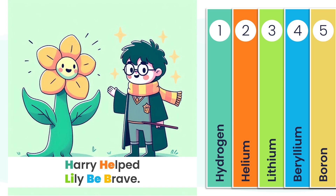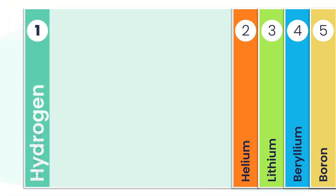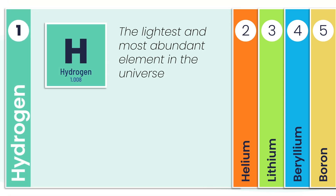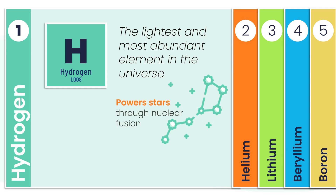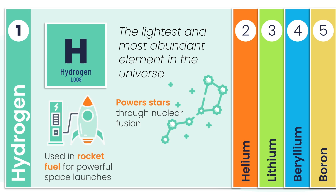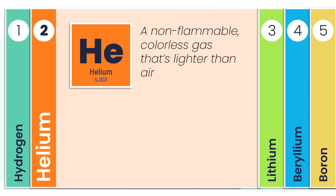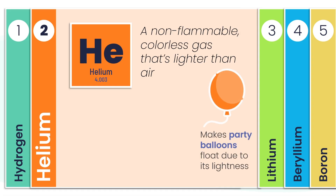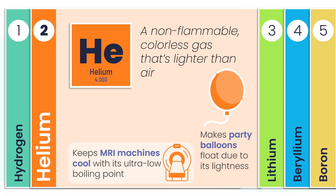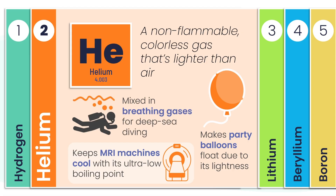Let's begin with the very first element in the universe, the one that started it all: hydrogen. Hydrogen is the universe's lightest and by far the most common element. It's what fuels stars, it powers rockets, and when it bonds with oxygen — voilà — water. Helium is a colorless, non-flammable gas, and it's even lighter than air. It lifts balloons high into the sky, powers MRI machines, and helps deep-sea divers breathe safely even way down under pressure.